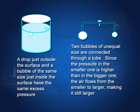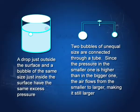If you have two bubbles — one smaller, one larger — and bring them into contact by a nozzle and open it, the smaller bubble has higher internal pressure because excess pressure is inversely proportional to radius. So the air will flow from the smaller bubble into the larger one, and the smaller bubble will actually become smaller in size.